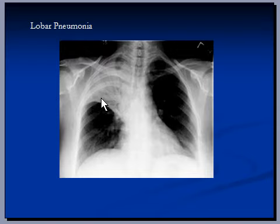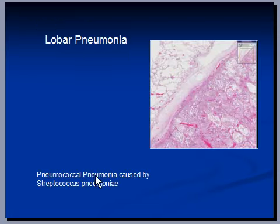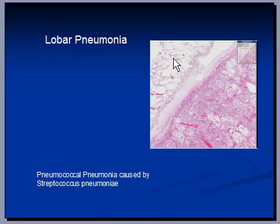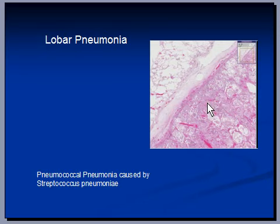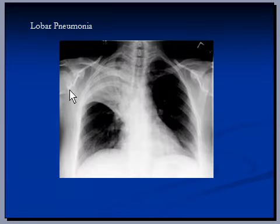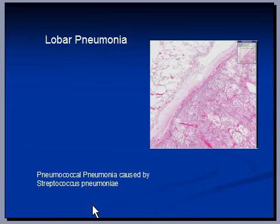If we were to take a sample partially from the infected lobe and partially from the healthy lobe of the lung and view it under microscope, that sample would look like this. This is the fissure, and this area is from healthy lung where the alveoli are filled with air. On the other side of the fissure, from the infected lobe, the alveoli are filled with exudates — pus, maybe fibrin, maybe blood. This type of pneumonia is known as lobar pneumonia or pneumococcal pneumonia, and it can happen in any lobe of the lung. It is usually caused by a bacterium known as Streptococcus pneumoniae, which can be treated with penicillin if not contraindicated.